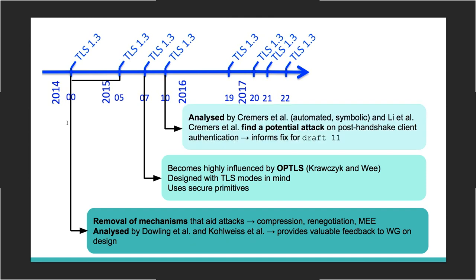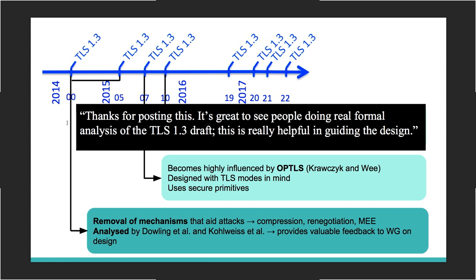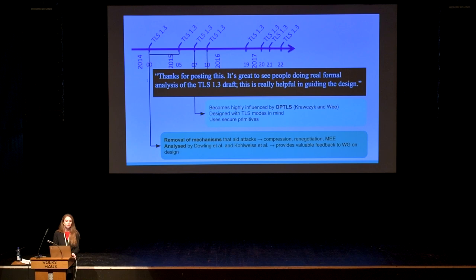By draft 10, many cryptographic mechanisms had started to stabilize. Cremers et al. performed a symbolic analysis of TLS 1.3 and found a potential attack against the newly proposed post-handshake client authentication mechanism. When this attack was posted to the mailing list, the response was very positive: 'Thanks for posting this. It's great to see people doing real formal analysis of the TLS 1.3 draft. This is really helpful in guiding the design.' The academic community's efforts were really starting to be recognized prior to the protocol's release.